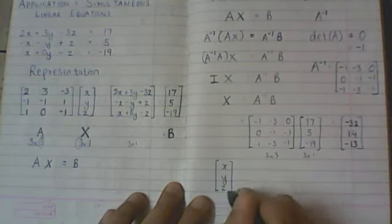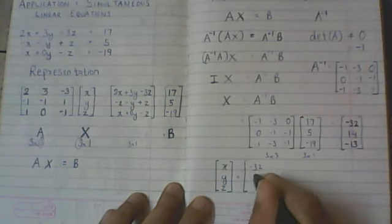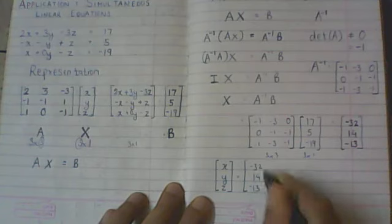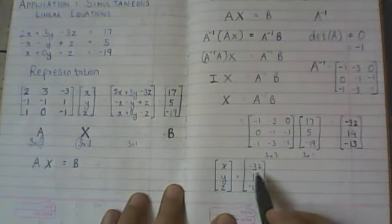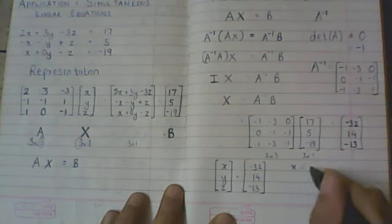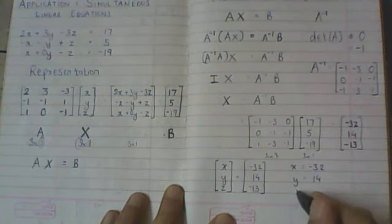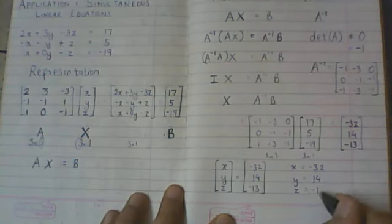Because remember what equality of two matrices means, when I am saying that these two matrices are equal, what I am saying is that the entries match. So I am saying that x is equal to minus 32, y is equal to 14, z is equal to negative 13.